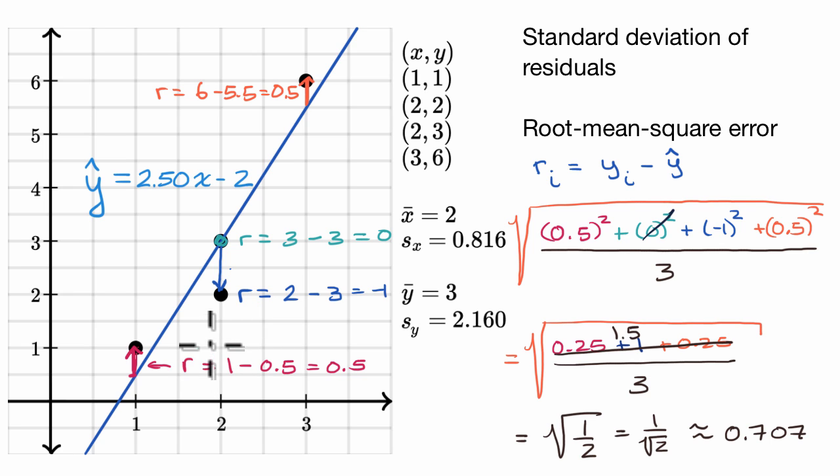If you wanted to visualize that, one standard deviation of the residuals below the line would look like this. And one standard deviation above the line for any given x value would go one standard deviation of the residuals above it. This does seem to be roughly indicative of the typical residual.